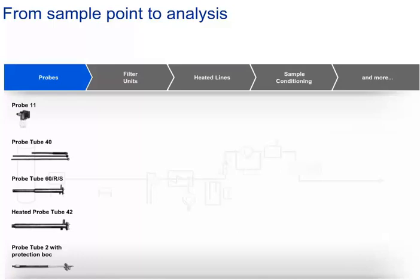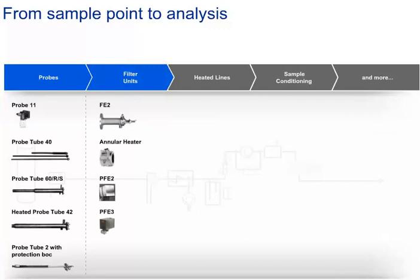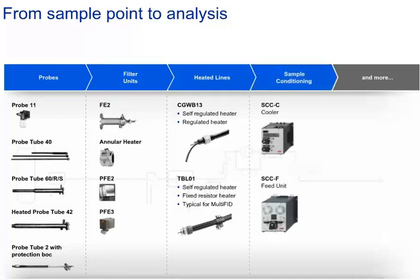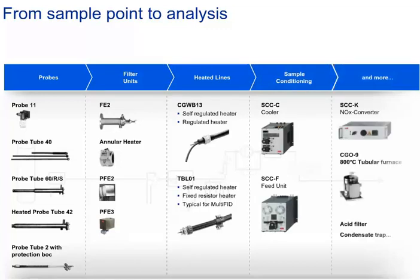The product range includes: various probes made from suitable materials in different lengths; special filter units that remove dust particles directly at the sample point; heated lines in various lengths to transport the sample gas safely to the analysis shelters without condensation; process-proven coolers and pumps; and gas converters, furnaces, and acid filters that help prepare sample gases from difficult mixtures so that they can be measured with common sensor technologies.